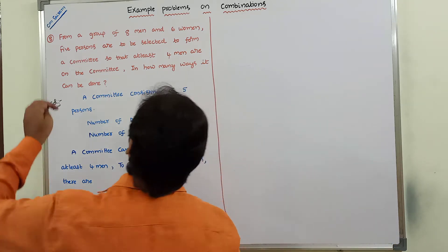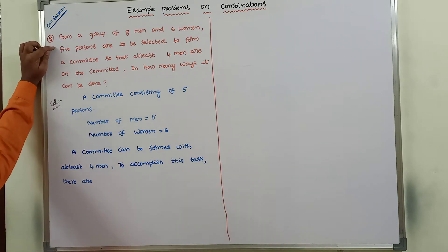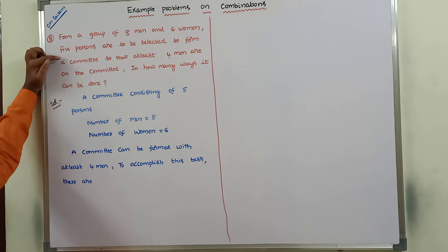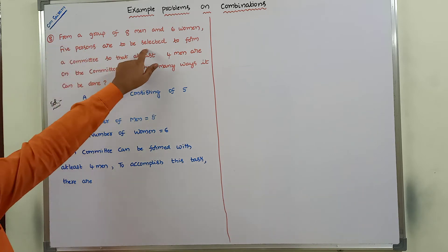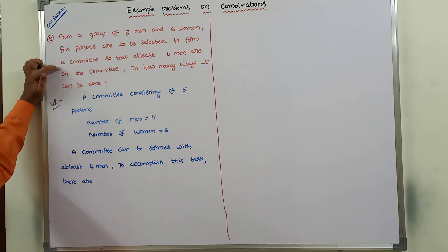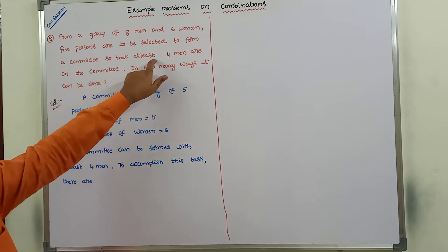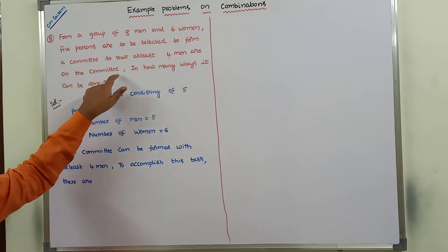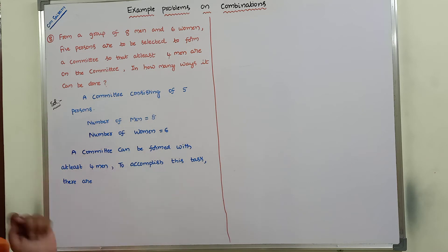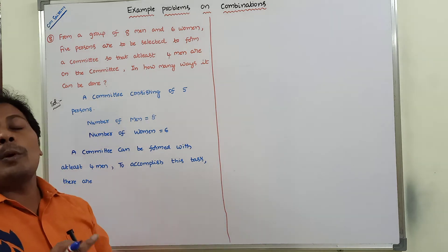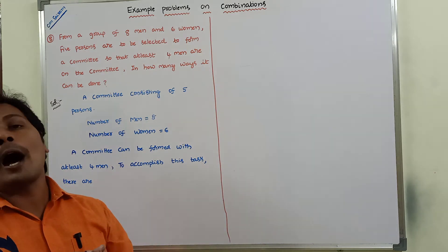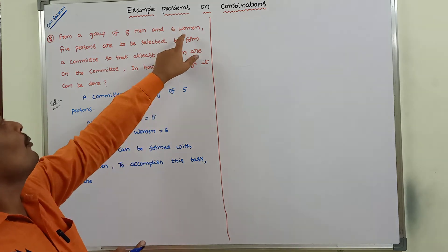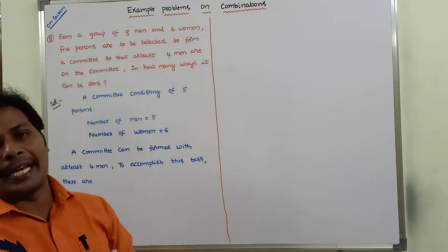The problem is: from a group of eight men and six women, five persons are to be selected to form a committee so that at least four men are on the committee. In how many ways can it be done? So a committee is to be formed with five persons among six women and eight men.